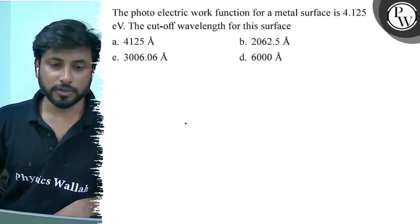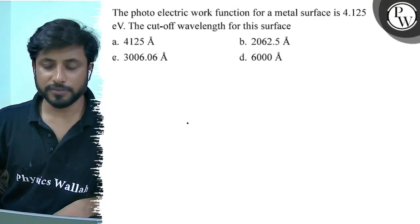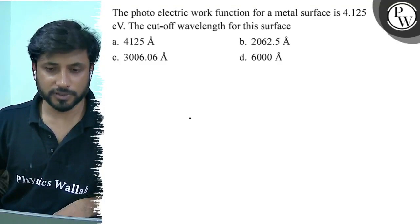Hello, let us see this question. The photoelectric work function for a metal surface is 4.125 electron volts. The cutoff wavelength for this surface is